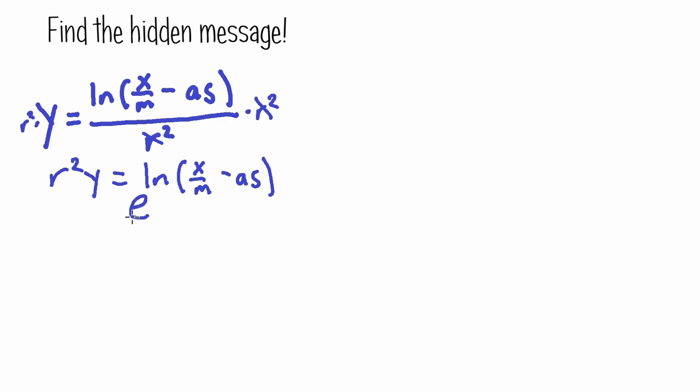So on the left we're going to put a base of e also, so we have e to the power of r squared y. This is the new exponent. And now this e and ln, they cancel each other out, so it's just going to be whatever was inside of the ln.